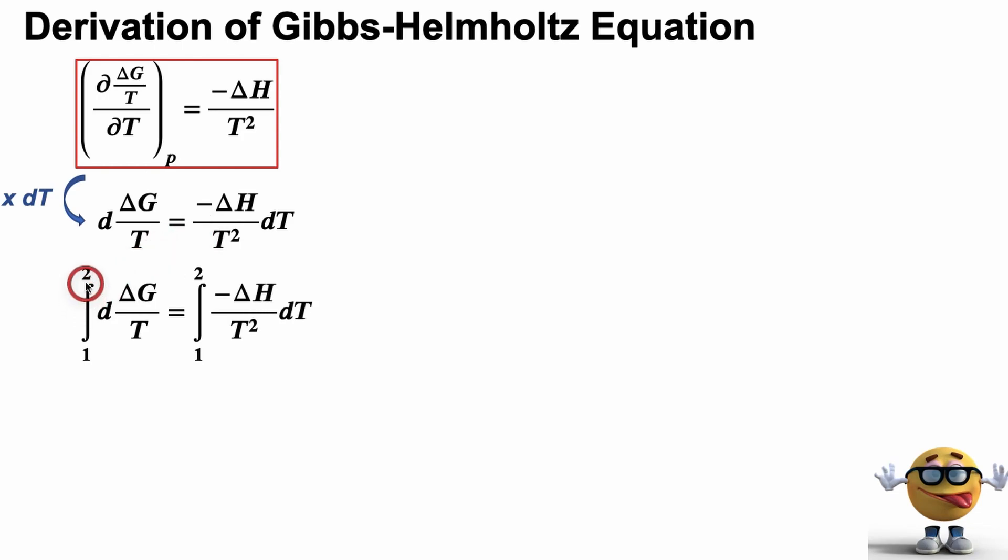So what we're going to do is multiply both sides by dT. So we're just left with this numerator here. And this partial symbol, this funky d, becomes a normal d because we're no longer taking the derivative with respect to anything. We have our dT. This dT is now moved to the other side. And at this point we can integrate. So we'll integrate both sides. And we're going to integrate from T1 to T2.